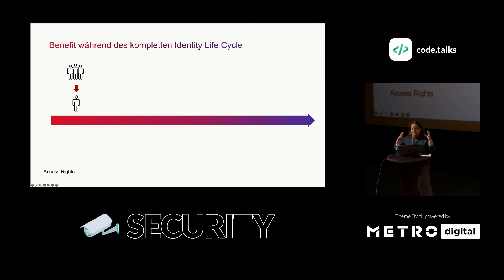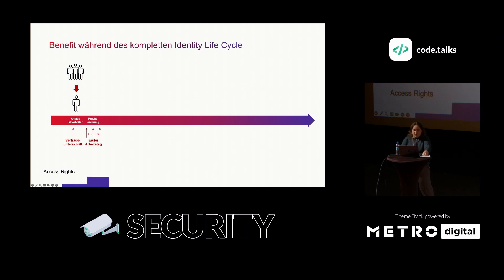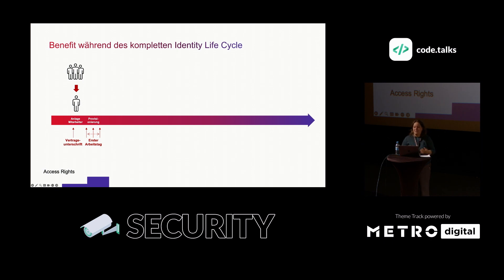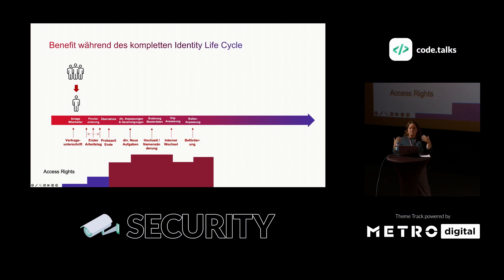IAM also manages everything across all the changes an employee goes through in their life at the company. We call these Joiner-Mover-Leaver processes - but they are a bit more granular in detail, there are more than just three. During the joiner phase you can pre-order many things - subscribe a user to certain teams or Slack channels in advance. Ideally, on day one when they get their bouquet of flowers - which could also be automatically triggered via procurement - they're immediately ready to work productively.